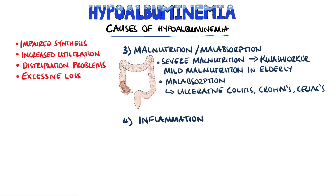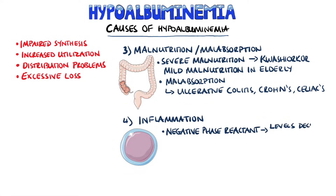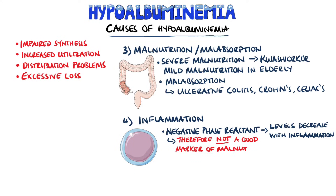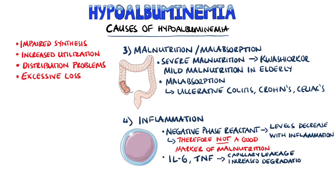Albumin itself is a negative acute phase reactant, meaning its level decreases with inflammation. Cytokines like IL-6 and TNF cause increased leakage from the capillaries, increased degradation, and less gene transcription of the albumin gene, meaning less synthesis. Conditions like sepsis and septic shock are particularly notable.